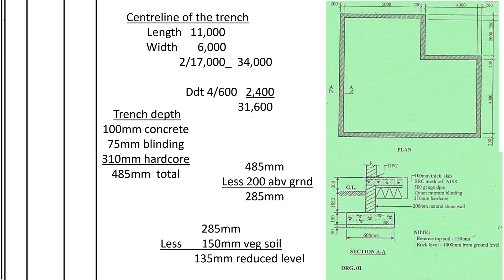Now we shall excavate for the foundation trench. When we are excavating, we need to calculate the center line — that is the center line of these walls. You can see the center line of the trench here. The trench is 600 millimeters wide. To find the center of that trench, it shall be 600 divided by 2, which is 300. Remember, the spread is 200, the wall is 200, and the spread on the other side is 200. So the 300 mark lies at the center of the wall. If we find the center line of the trench, it will be the same as the center line for the wall.